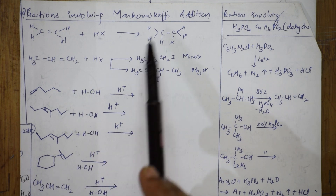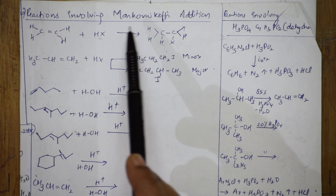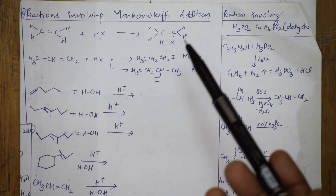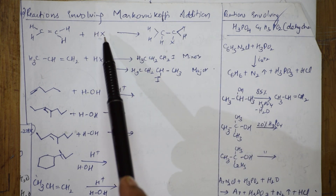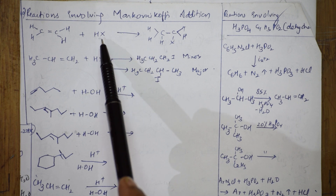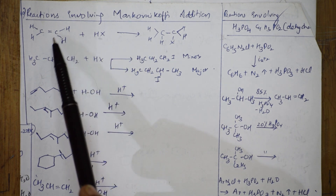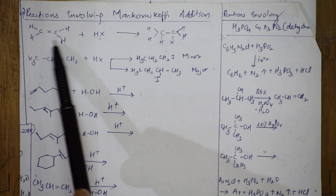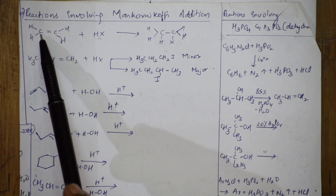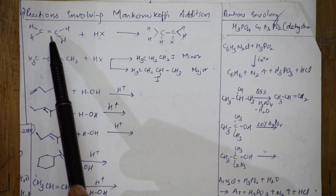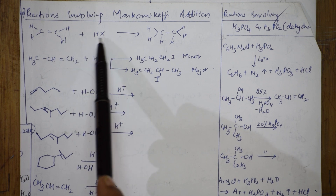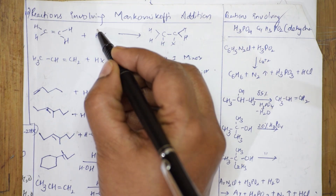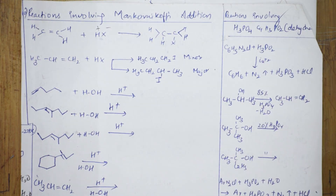In Markovnikov's addition, suppose you are going to add HX, where X can be chlorine, bromine, or iodine. The key concept is not what X is — it is the negative addendum. When you have a symmetrical alkene, both carbons are equal, and there is no problem at all. You can break the bond and directly add around the double bond.